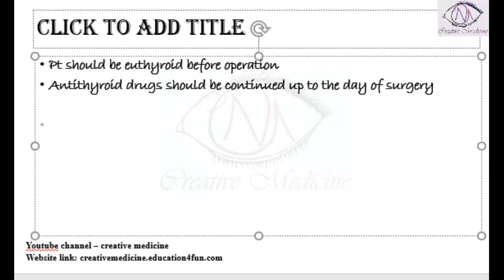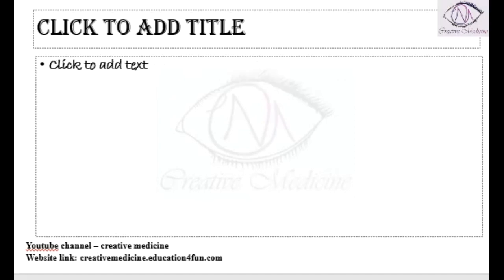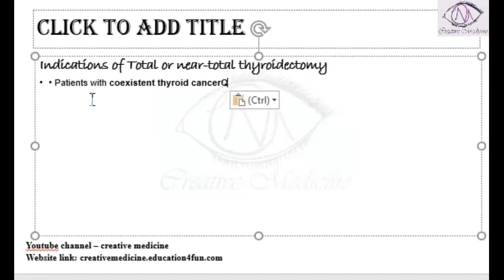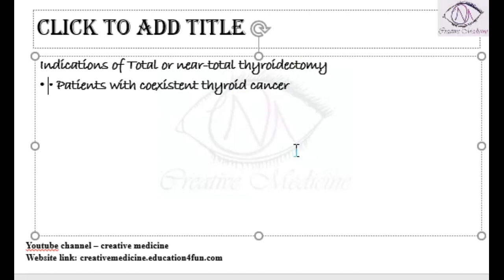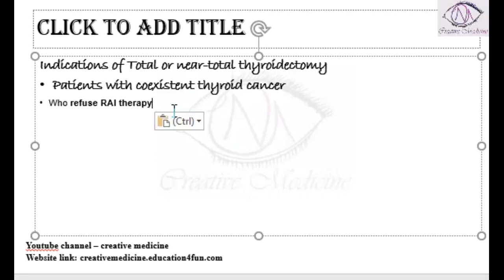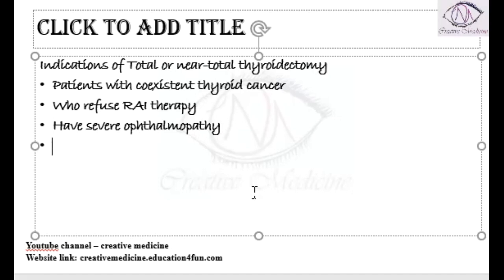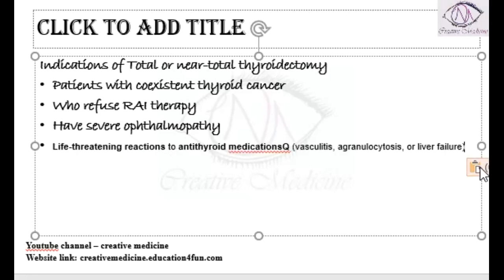In surgery, we generally perform total or near-total thyroidectomy. Indications for total or near-total thyroidectomy include: co-existent thyroid cancer, because we do not want malignant cells left in the gland; patients who refuse radioactive iodine therapy; and patients with severe Graves ophthalmopathy, since radioactive iodine therapy worsens ophthalmopathy. In such cases, total or near-total thyroidectomy is performed.